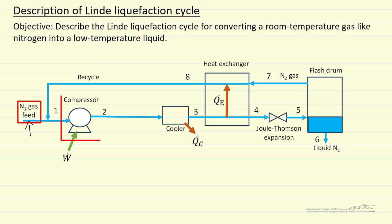We compress it to high pressure. Here I am showing one compressor, but we need to get the high pressure in order to be in the right region in the phase diagram, and also in order to take advantage of adiabatic Joule-Thompson expansion.